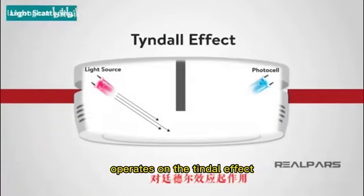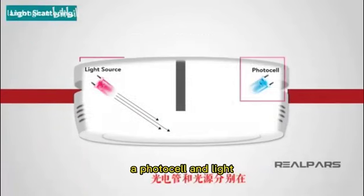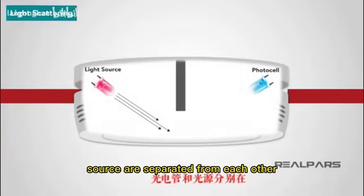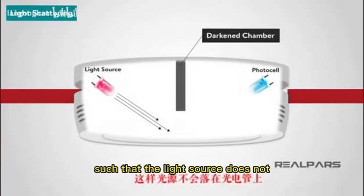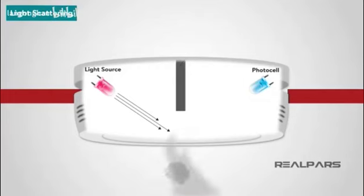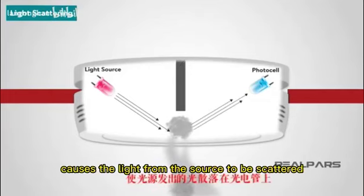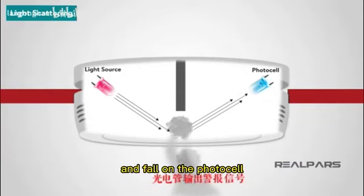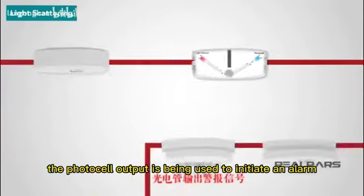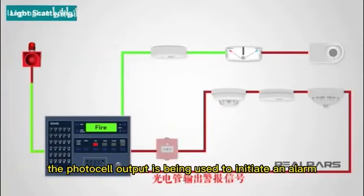The light scattering smoke detector operates on the Tyndall effect. A photocell and light source are separated from each other by a darkened chamber, such that the light source does not fall on the photocell. The passage of smoke into the chamber causes the light from the source to be scattered and fall on the photocell. The photocell output is being used to initiate an alarm.